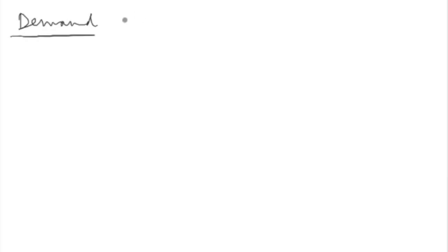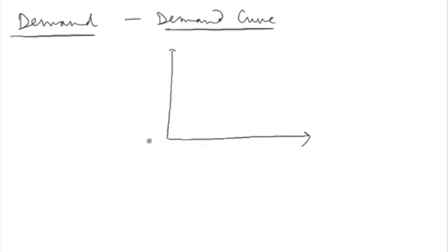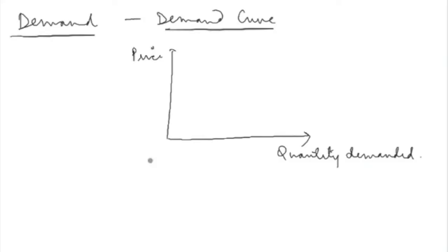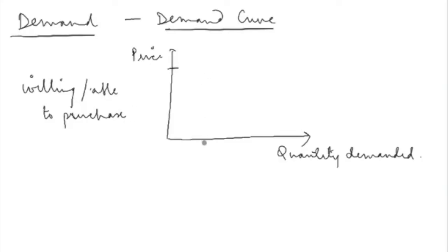Now we move to the main concern of this chapter: demand. Demand is closely related to the demand curve, because you understand demand better with a visual representation. The demand curve typically has price on the y-axis and quantity demanded on the x-axis. Quantity demanded of any product or service is the amount of that good that buyers are willing and able to purchase. At a given price, the demand curve tells you what quantity is demanded by a consumer.